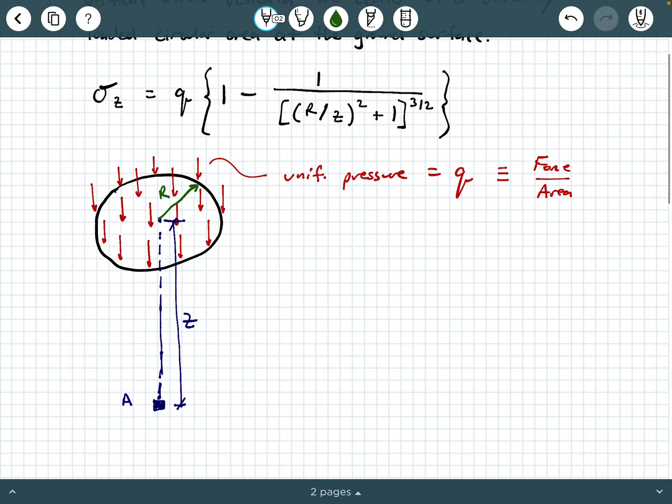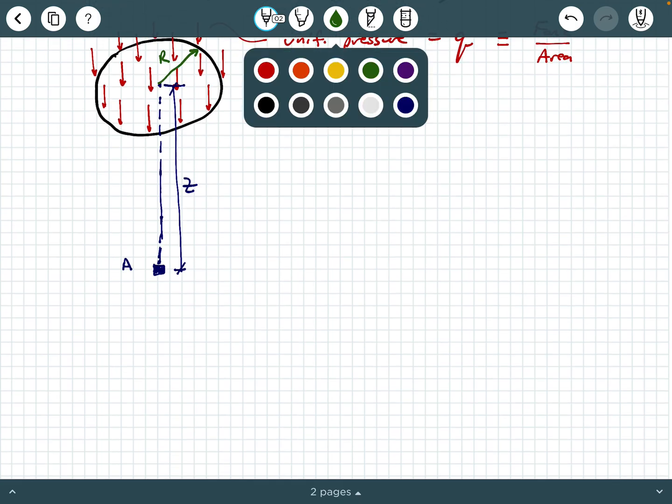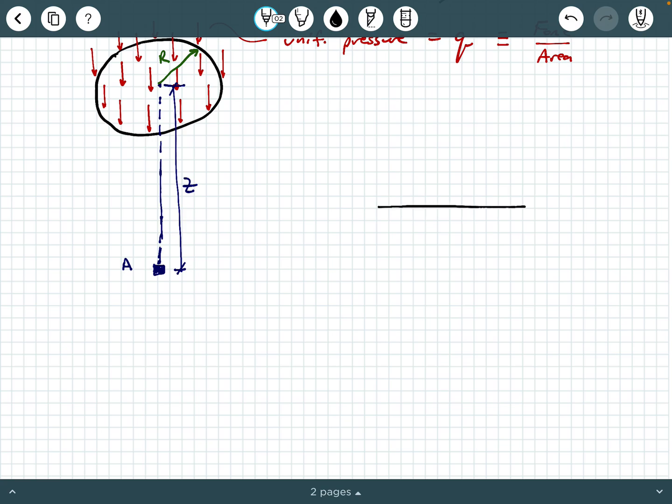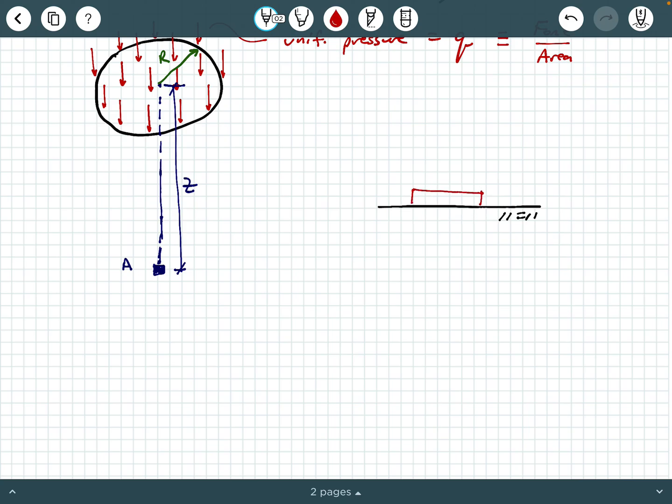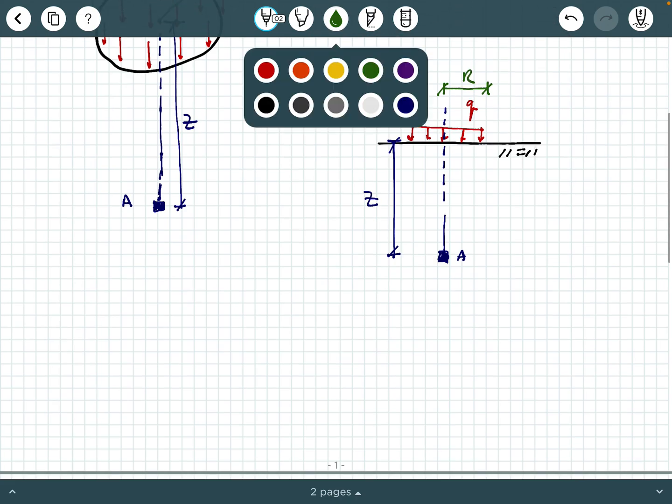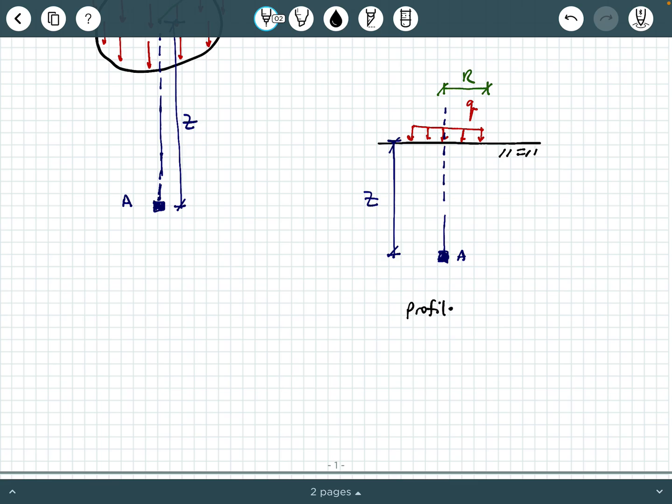So if you wanted to look at maybe a 2D side view or profile view of this, you can consider this to be the ground surface. And then the uniform circular area is right here. And again, that's going to have a magnitude of q. And then beneath the center of that circle is this point A right here, which is at a depth of z beneath the center of that circle. And again, the radius R is the overall radius of the loaded area, capital R. And then again, we would call this a profile view.